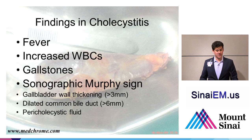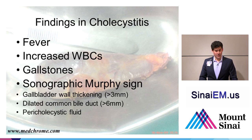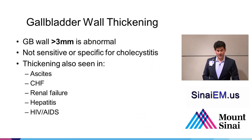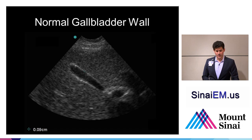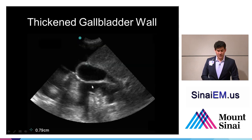We've talked about the findings of cholecystitis: fever, increased white blood cell count, gallstones, sonographic Murphy sign, gallbladder wall thickening, dilated common bile duct, and pericholecystic fluid. Let's look at gallbladder wall thickening — greater than 3 or 4 millimeters is abnormal. It's not sensitive or specific, unfortunately, for cholecystitis. You can also find it in many other common pathologic conditions like ascites, congestive heart failure, diabetes, HIV, and hepatitis. A normal gallbladder wall is relatively thin; we measure it across the anterior wall.